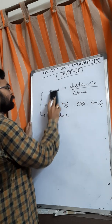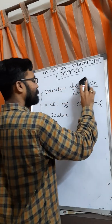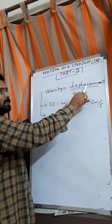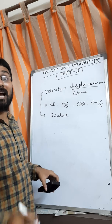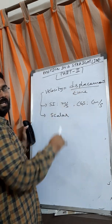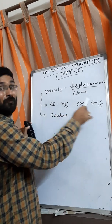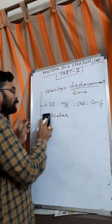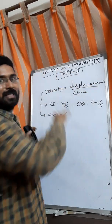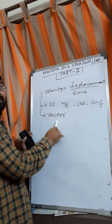Then we discuss velocity. Velocity is connected to displacement. Velocity is nothing but displacement by time — the displacement travelled per unit time is called velocity. Displacement has the same units as distance, so there is no change in units between speed and velocity. But what changes is that velocity is a vector quantity, because displacement is a vector, and vector divided by scalar is again a vector. So velocity is a vector quantity.